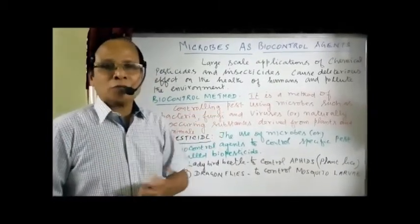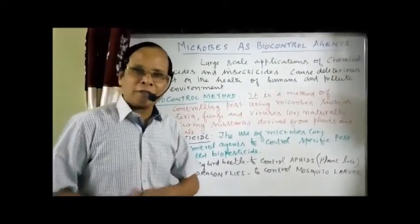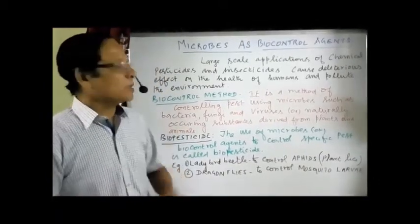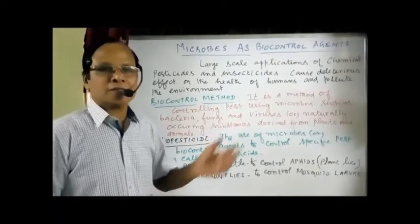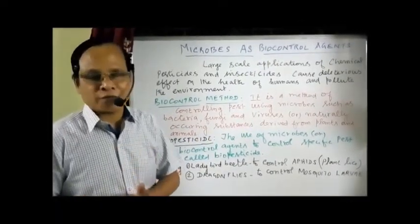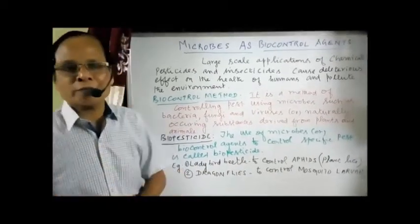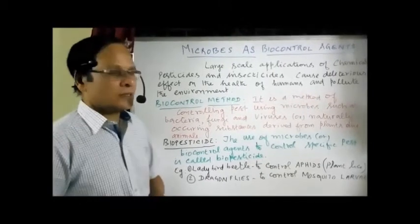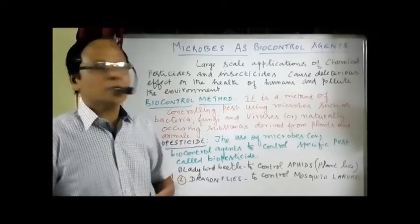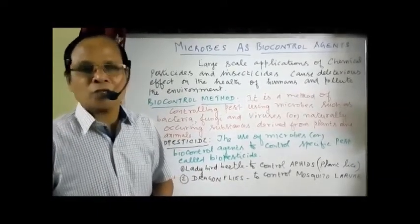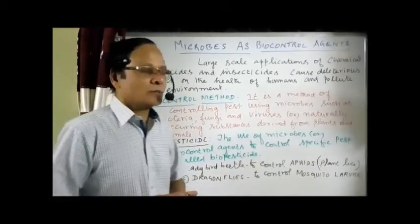Normally we are using pesticides and insecticides to kill mosquitoes or any other insects or any other pests. Large-scale applications of such chemical pesticides and insecticides have a deleterious effect on human health, and they also pollute the environment. In order to avoid such effects and prevent pollution, we follow what is called the biocontrol method.